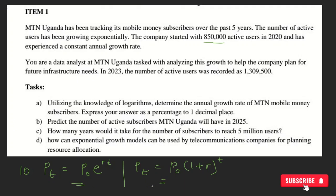For a case where growth happens at regular intervals — it is exponential growth, but the growth happens after every year — like in this case, the company experienced a constant annual growth rate. The growth is not continuous; it is annual. So we are considering growth after every year, not every moment. We are going to use the formula Pt = P0 · (1 + R)^T. So what do we need to note? Let's first look at the task.